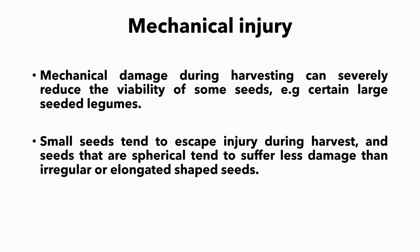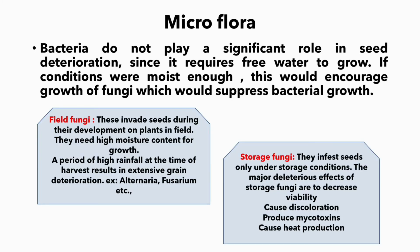Small seeds tend to escape injury during harvest, and seeds that are spherical tend to suffer less damage than irregular or elongated shaped seeds. Microflora: bacteria require free water to grow, so they do not play a significant role in seed deterioration. If conditions were moist enough, this would encourage the growth of fungi, which would suppress bacterial growth.